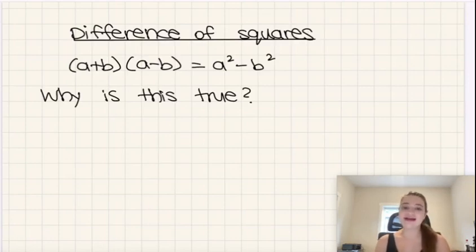Hello everyone, welcome back. Today we're going to be talking about differences of squares. So basically, the difference of squares formula states that (a+b)(a-b) = a² - b².